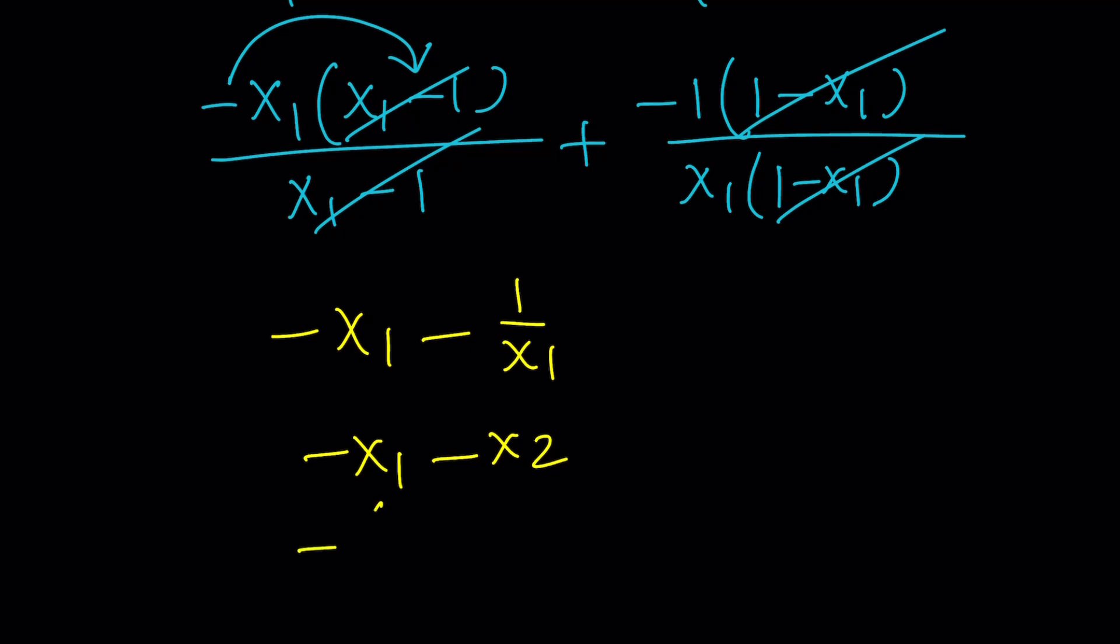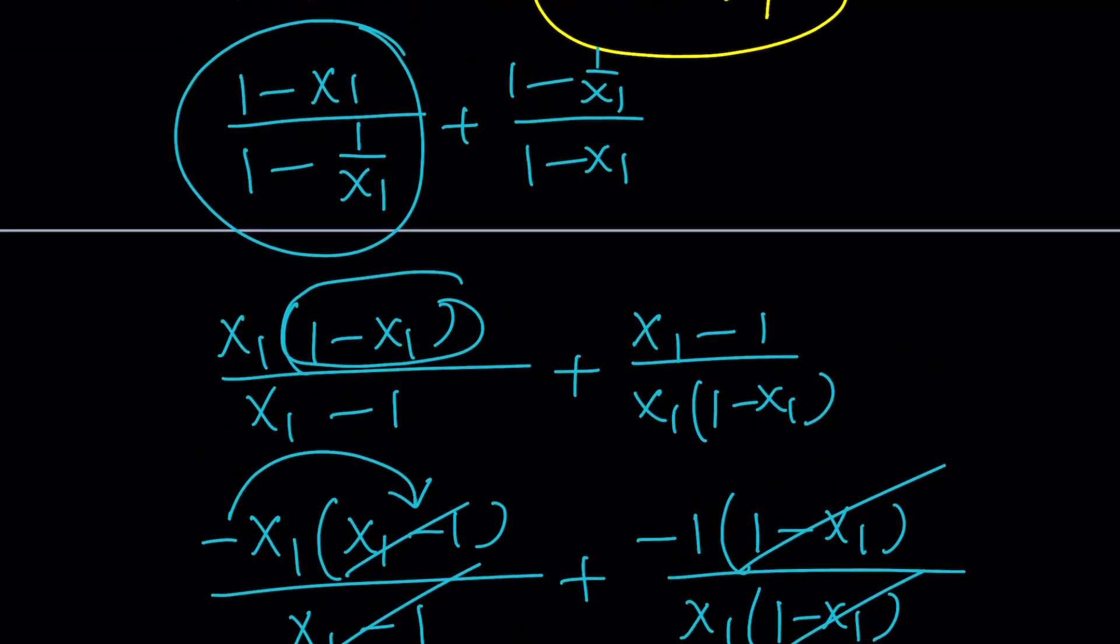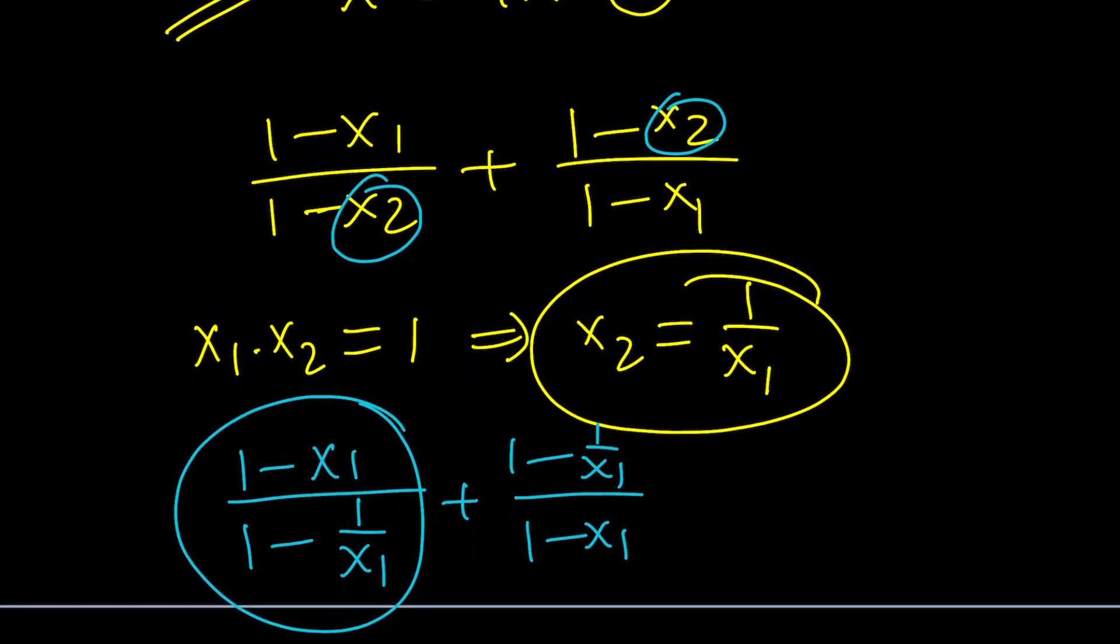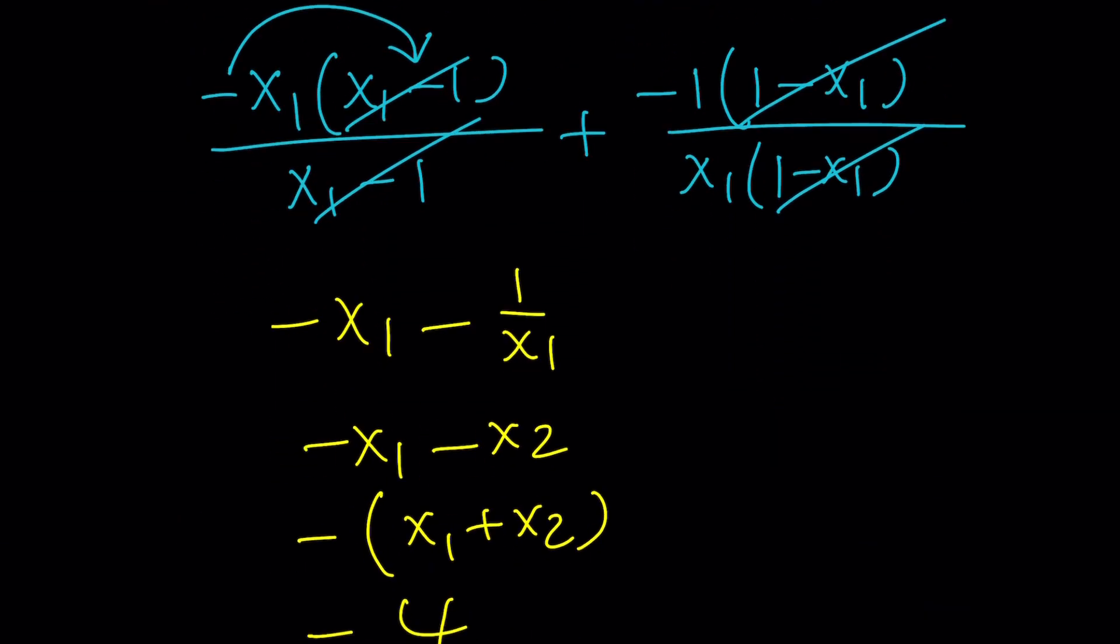But 1 over x sub 1 is the same as x sub 2. So this is negative x sub 1 minus x sub 2. But it's the opposite of the sum. But the sum is 4. Remember? So it's negative 4. You got that? So we manipulated this a little bit by using the fact that their product is 1. And then we use the sum, of course, at the very end. And this brings us to the end of this video.